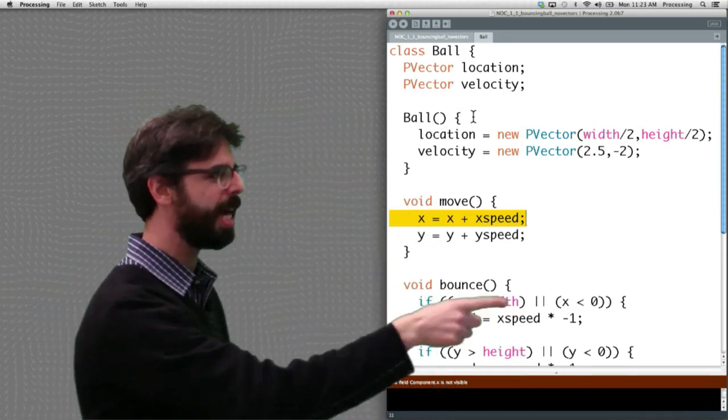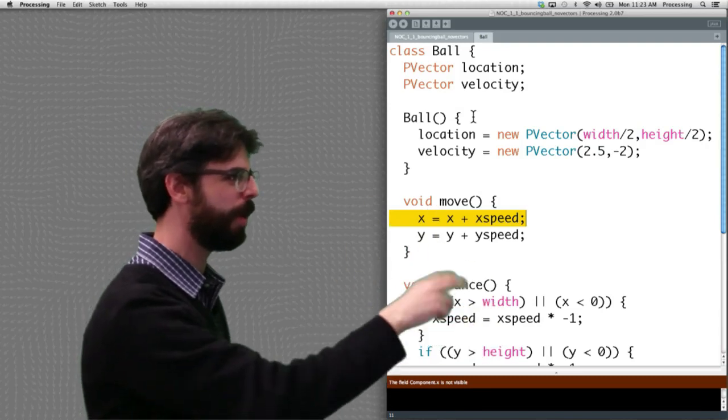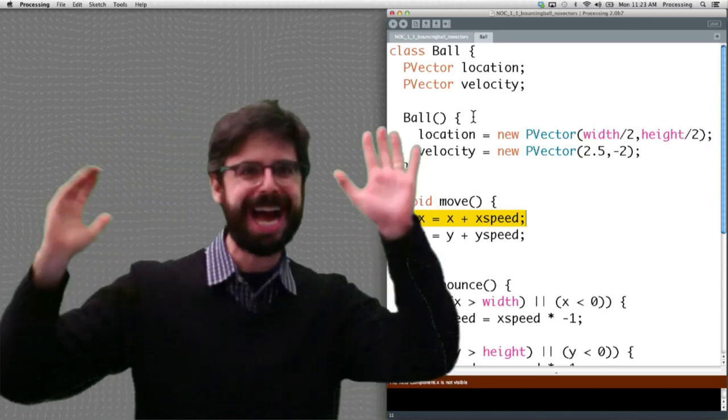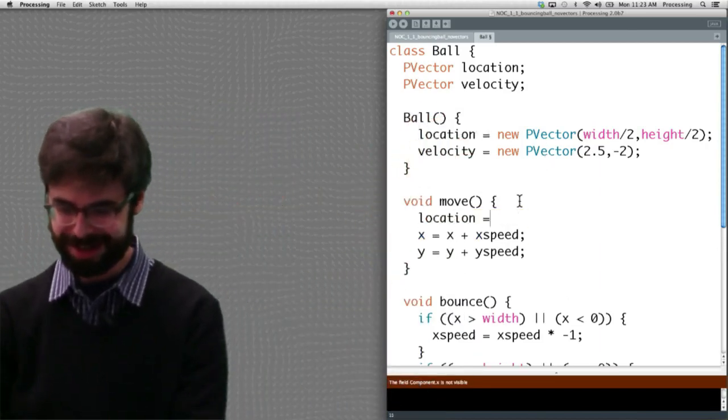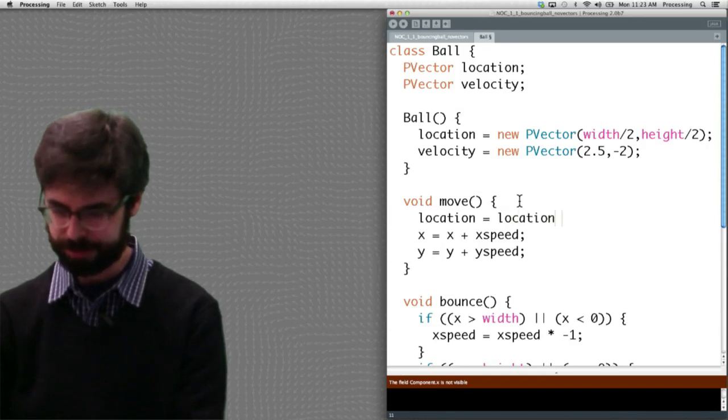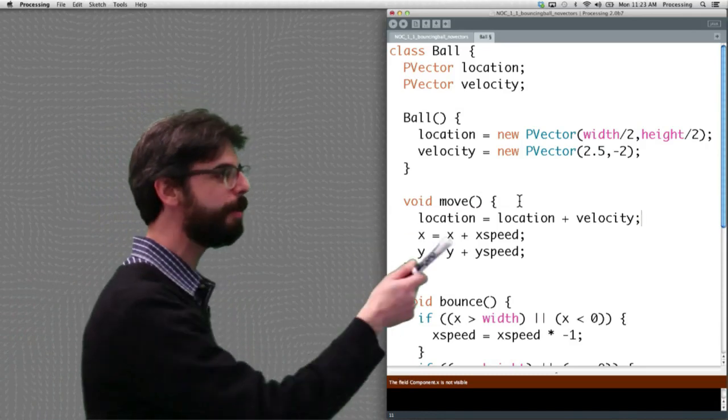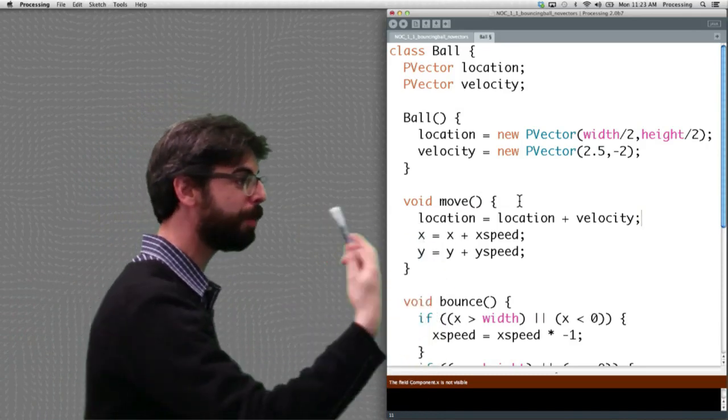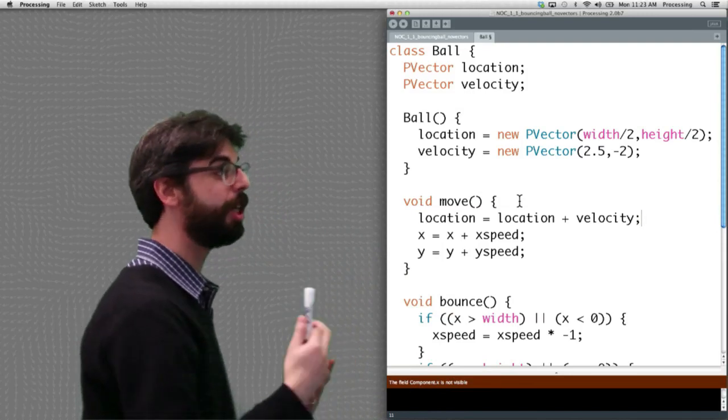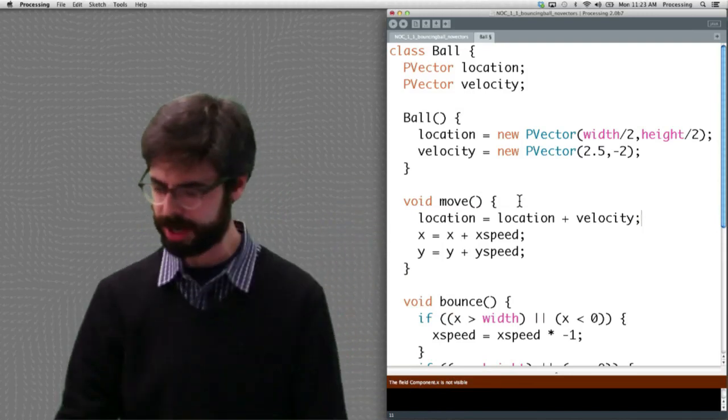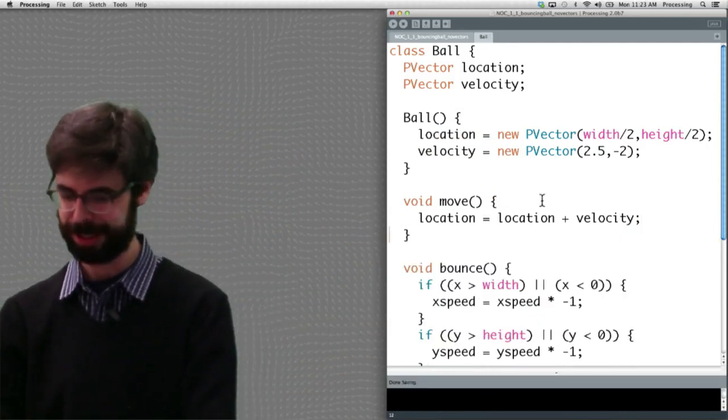Look, instead of x and y, instead of xSpeed and ySpeed, we have location and velocity. I know. I got it. OK, here's what we're going to write, right? Location equals location plus velocity, right? That's the same thing. Instead of two variables each getting changed by their corresponding xSpeed, ySpeed, now we have one variable getting changed by velocity. Look, that's got to be perfect, right? What could possibly be wrong with this? I think it's great. I think this is how the code should be. Let's run it.